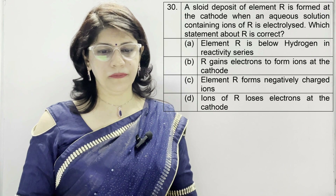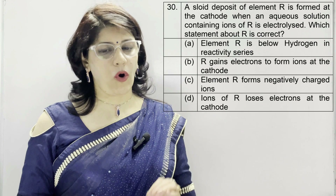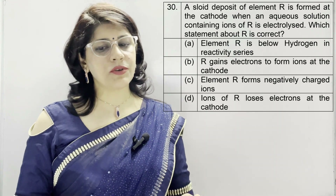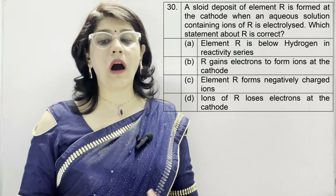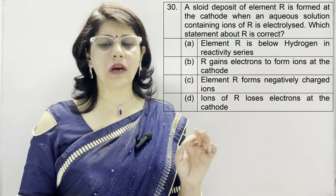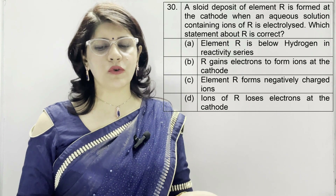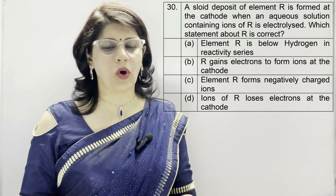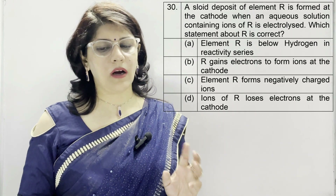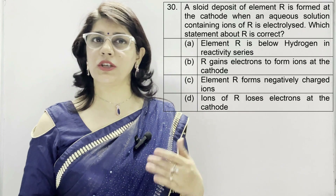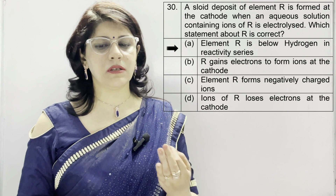Question number 30: a solid deposit of element R is formed at the cathode when an aqueous solution containing ions of R is electrolyzed. Which statement about R is correct? A: element R is below hydrogen in the reactivity series. B: R gains electrons to form ions at the cathode. C: element R forms negatively charged ions. D: ions of R lose electrons at the cathode. The correct option is A — element R is below hydrogen in the reactivity series.